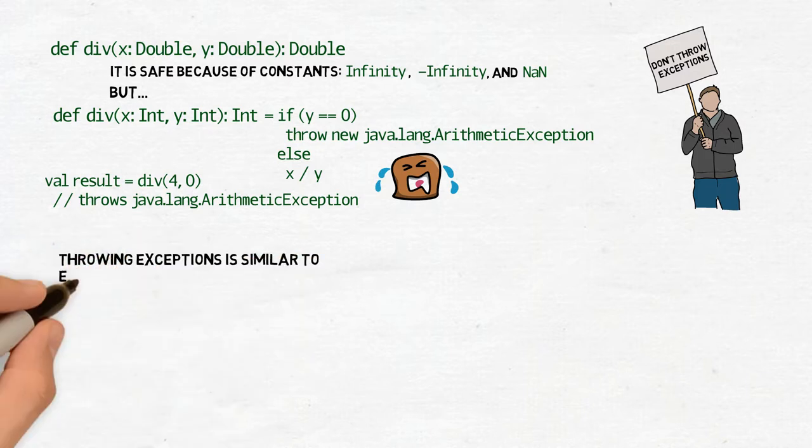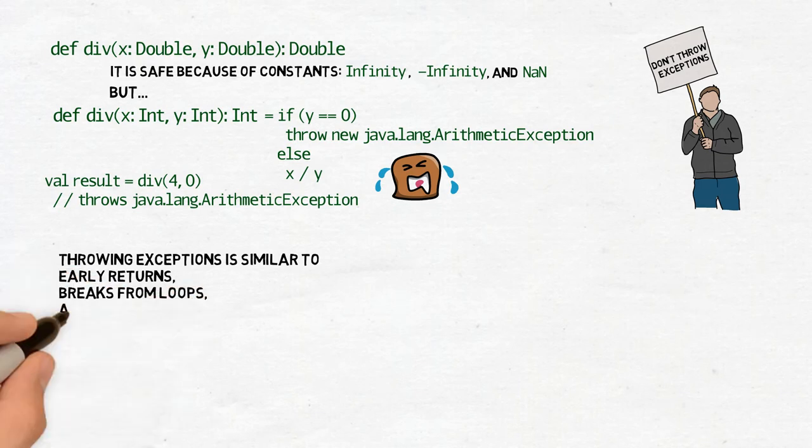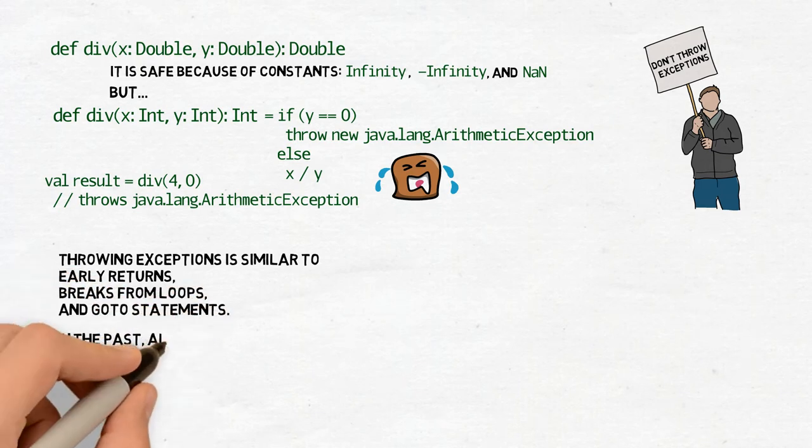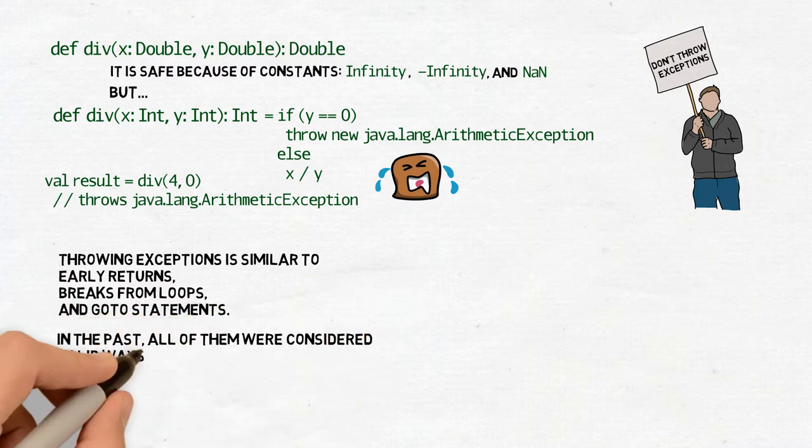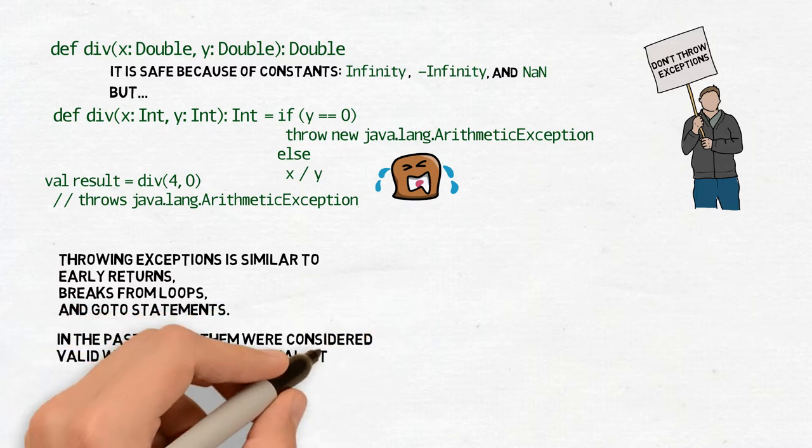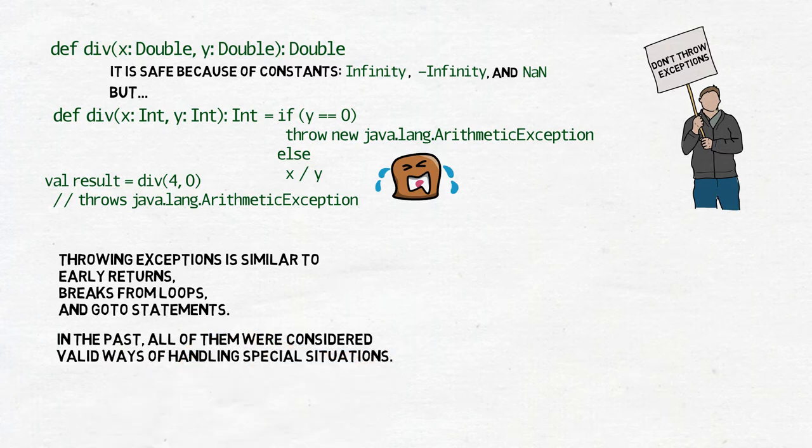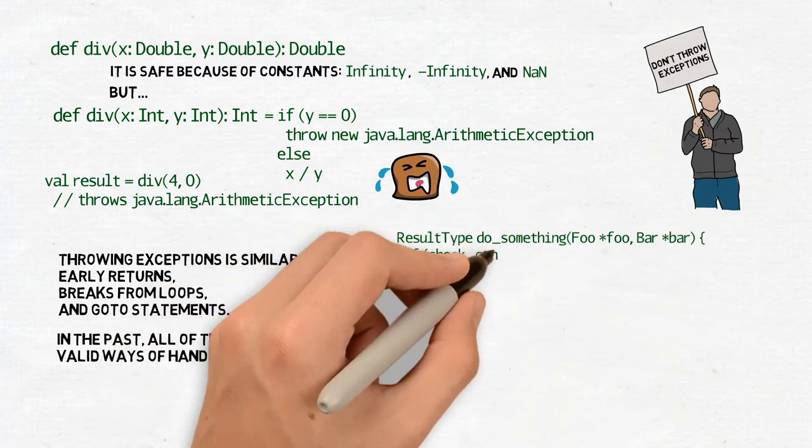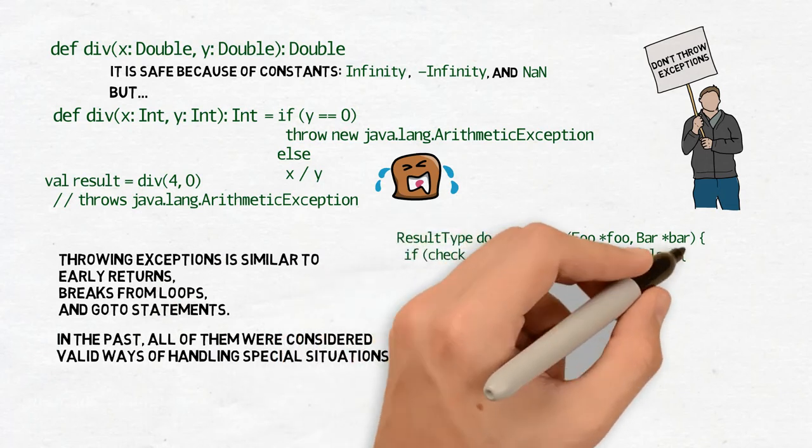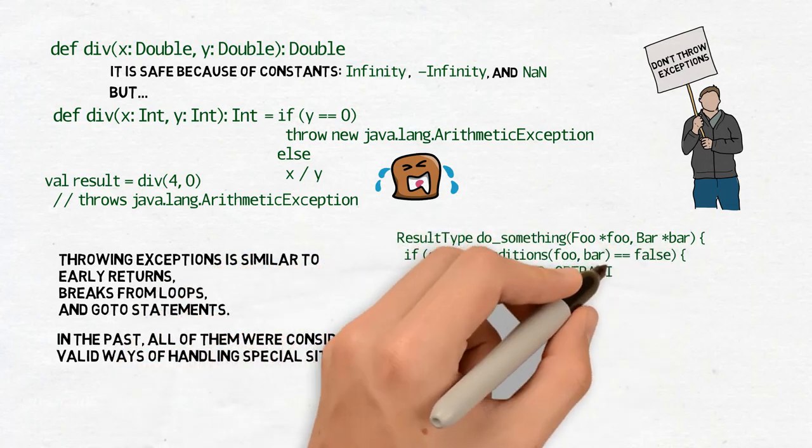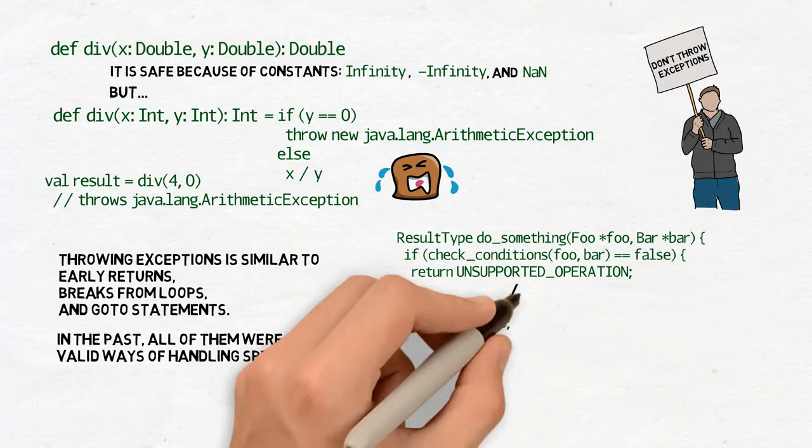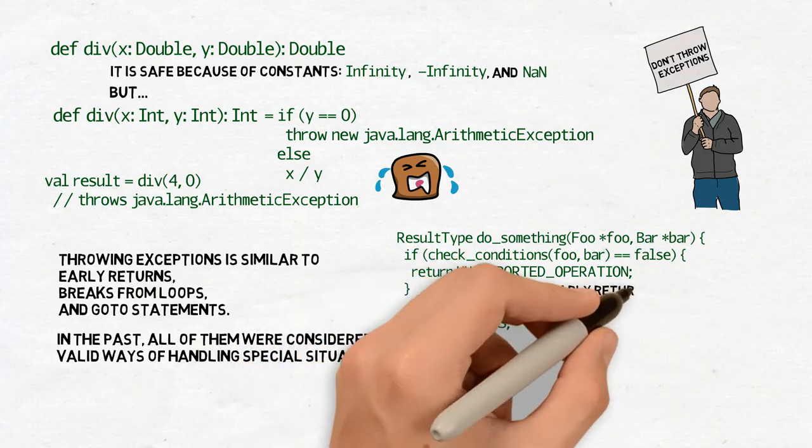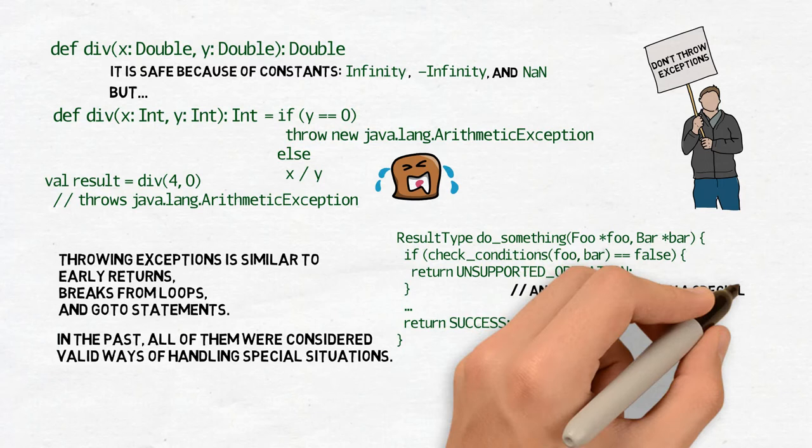Superficially, throwing exceptions is similar to early returns, breaks for loops, and go-to statements. At some points in the past, all of them were considered valid ways of handling special situations. The function would go to perform some assertions on its arguments or intermediate results, and if an assertion failed, it would early return with some special value. Or it would run a loop computing complex results from elements of a collection, but if an element was something not expected, it would break their loop early.